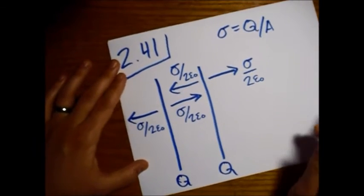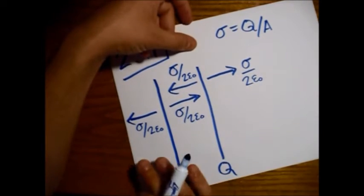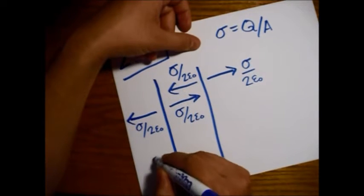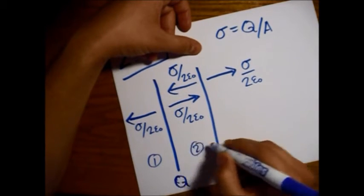So I'm going to divide this into, well, I have three different regions. I'll just put them in circles, 1, 2, and 3.